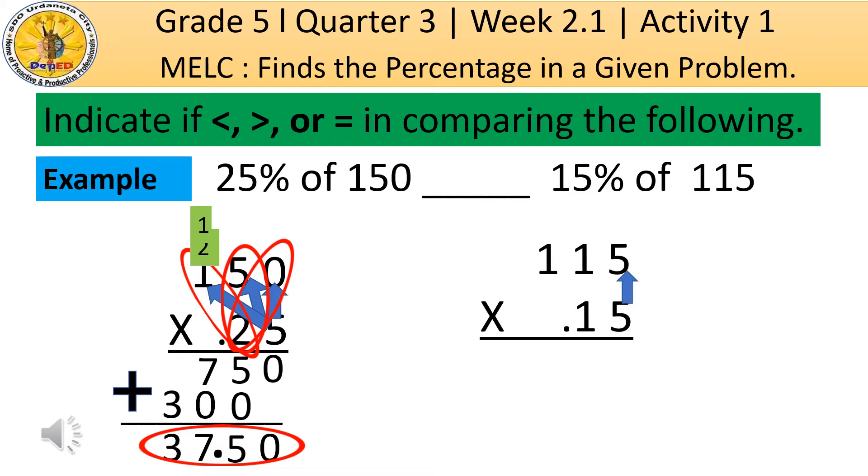5 times 5 is equal to 25. We group 2 to the second upper digit of multiplicand. Then, 5 times 1 is 5, plus 2 is equal to 7. Then, 5 times 1 is equal to 5.